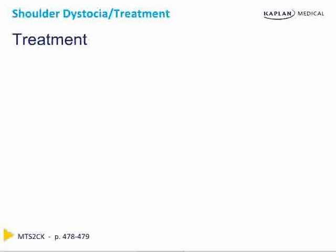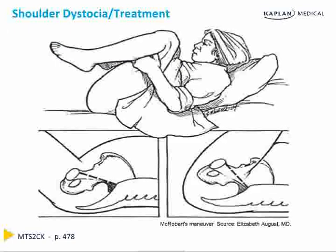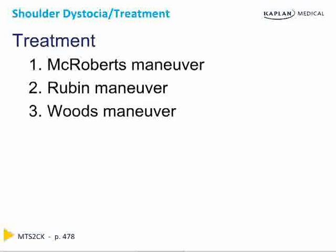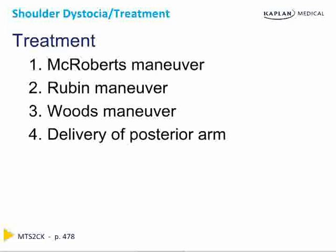If shoulder dystocia is suspected, follow these maneuvers. First is McRoberts maneuver — hyperflexion at the hips — allowing the obstetrical conjugate to be at its widest, performed along with suprapubic pressure directly behind the pubic symphysis to dislodge the anterior shoulder. If unsuccessful, attempt Rubin's maneuver by pushing the most accessible shoulder toward the anterior fetal chest, causing abduction of both shoulders and a smaller shoulder-to-shoulder diameter. Next is Wood's maneuver, rotating the shoulders by pushing the posterior shoulder toward the fetal back. After this, attempt delivery of the posterior arm to decrease the diameter passing through the pelvis.